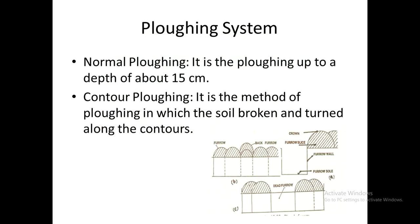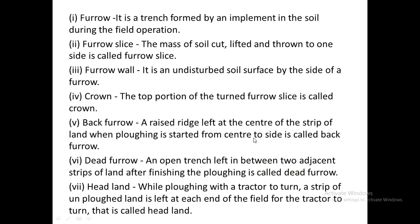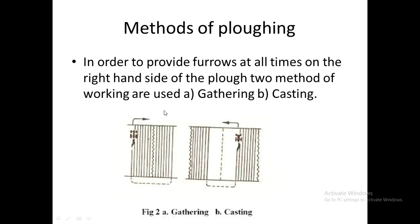After reviewing primary tillage implements, we look at plowing systems — the set methods for how we plow in the field. Plowing can be done at different depths, and if the field has a higher slope, contour plowing is used to plow along the contours. The different methods of plowing are gathering and casting. Gathering starts from the center and moves outward; casting starts from the outer edge and moves inward.